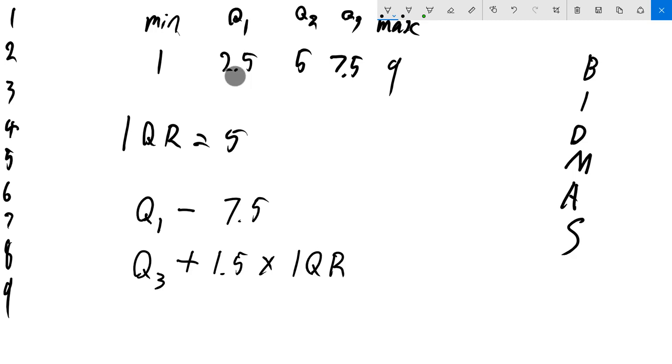Minus the first quartile, 2.5. 2.5 minus 7.5, that's equal to negative 5.